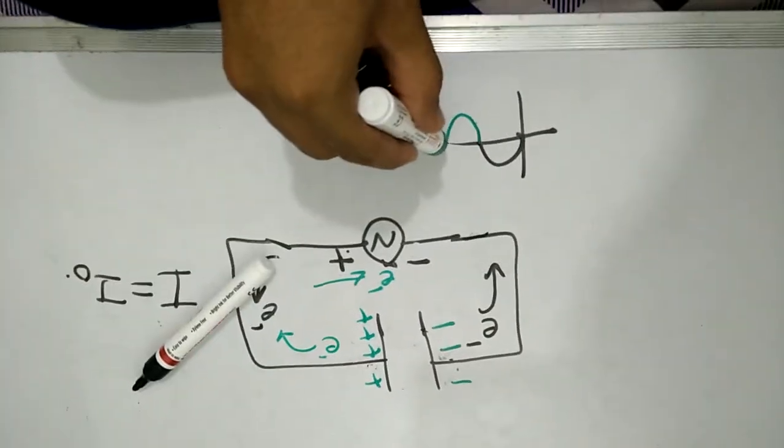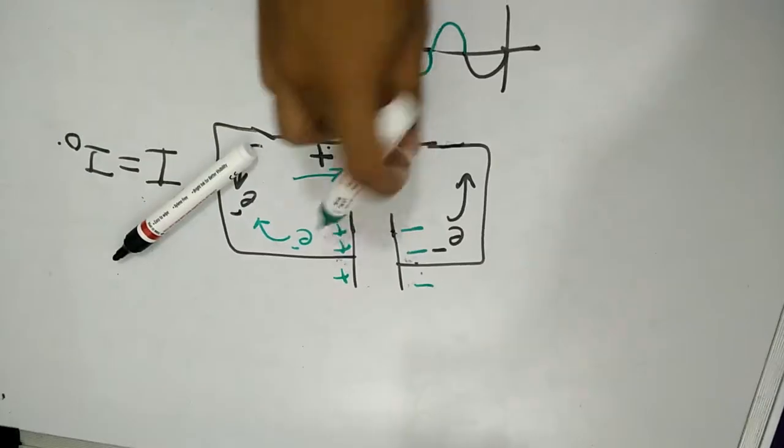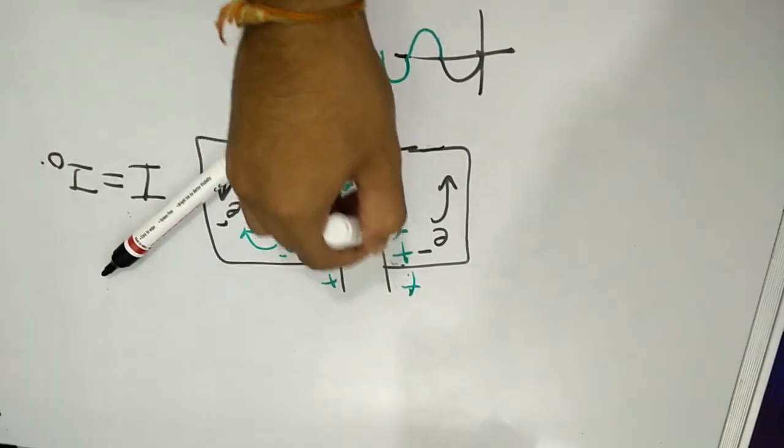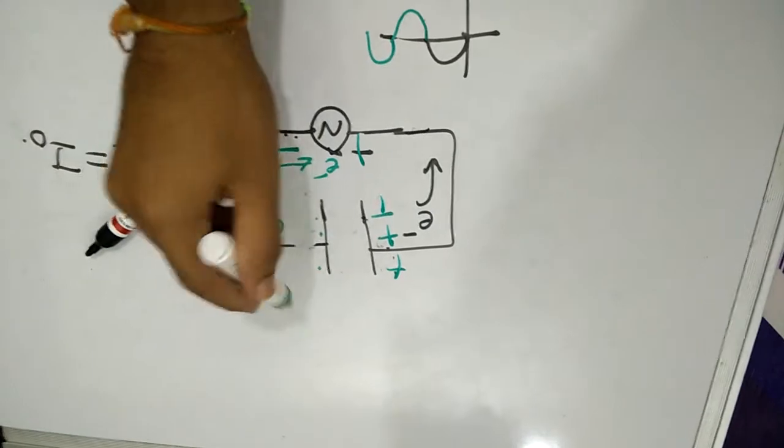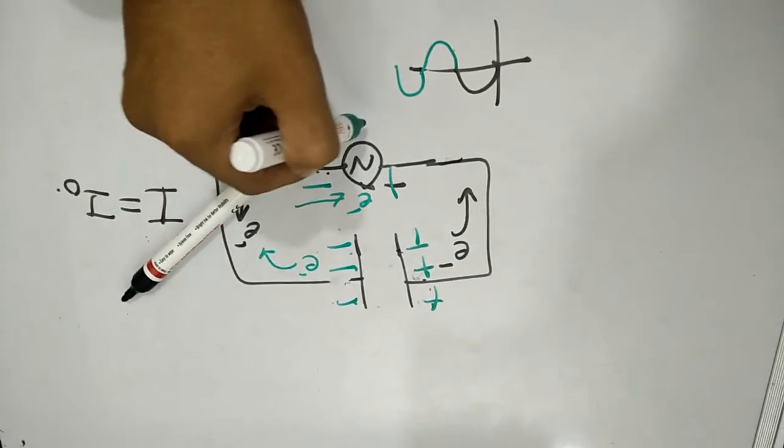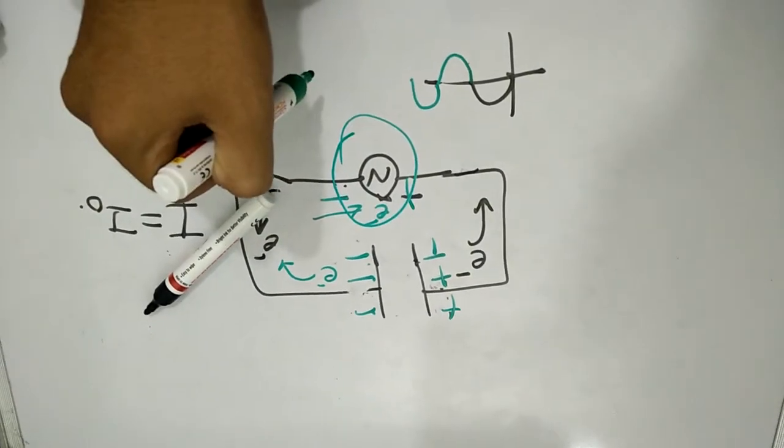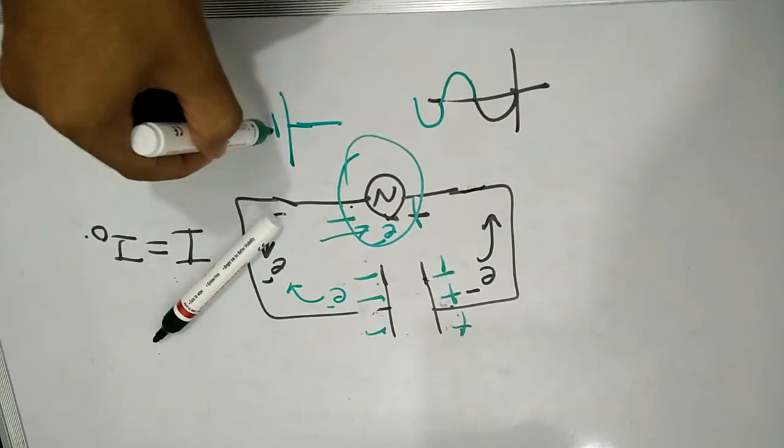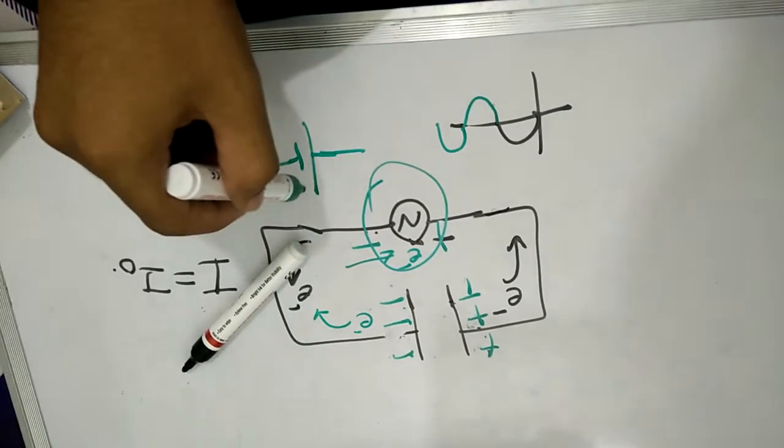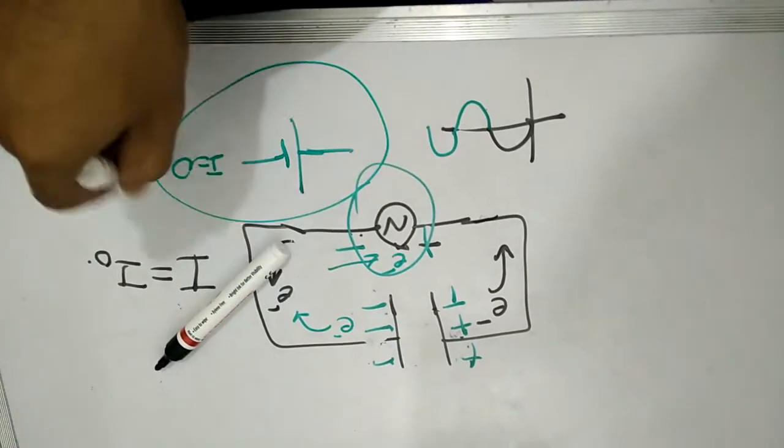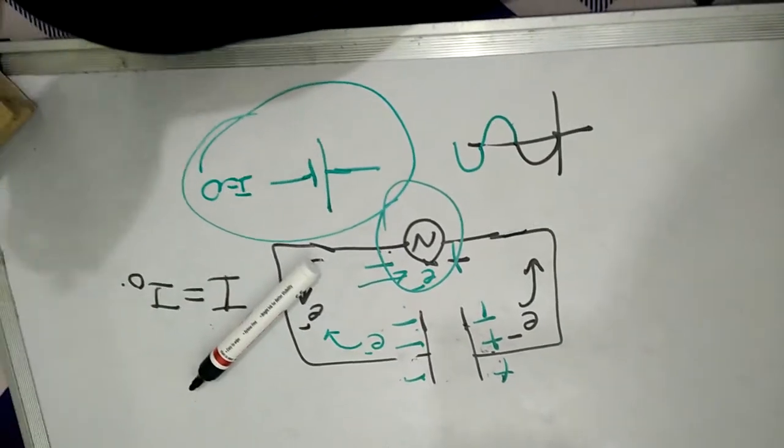So for the next positive cycle, the polarity will be again reversed and again you will get positive here and negative here. So that's why current is flowing continuously in AC source, but in DC source current will flow for some time and then it will not flow. Current will be zero after some time for DC.